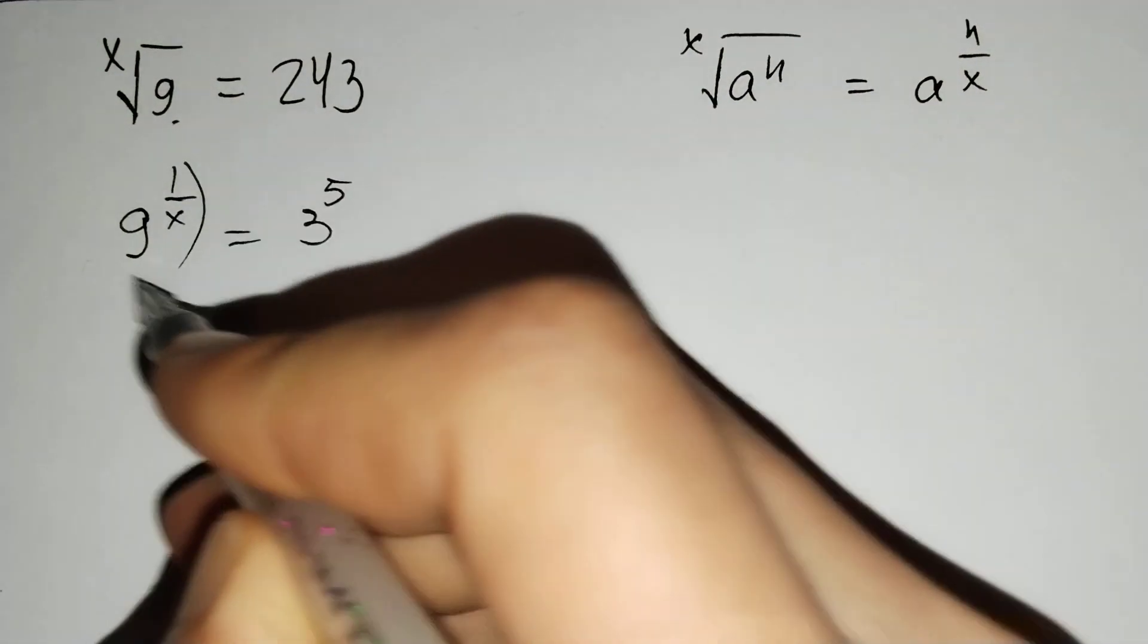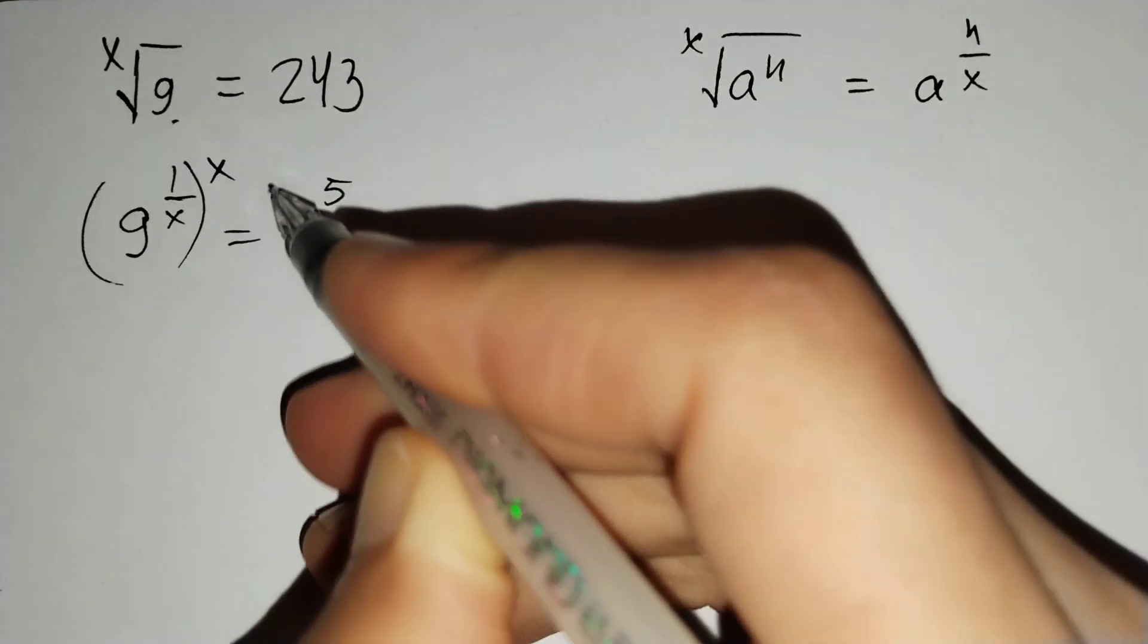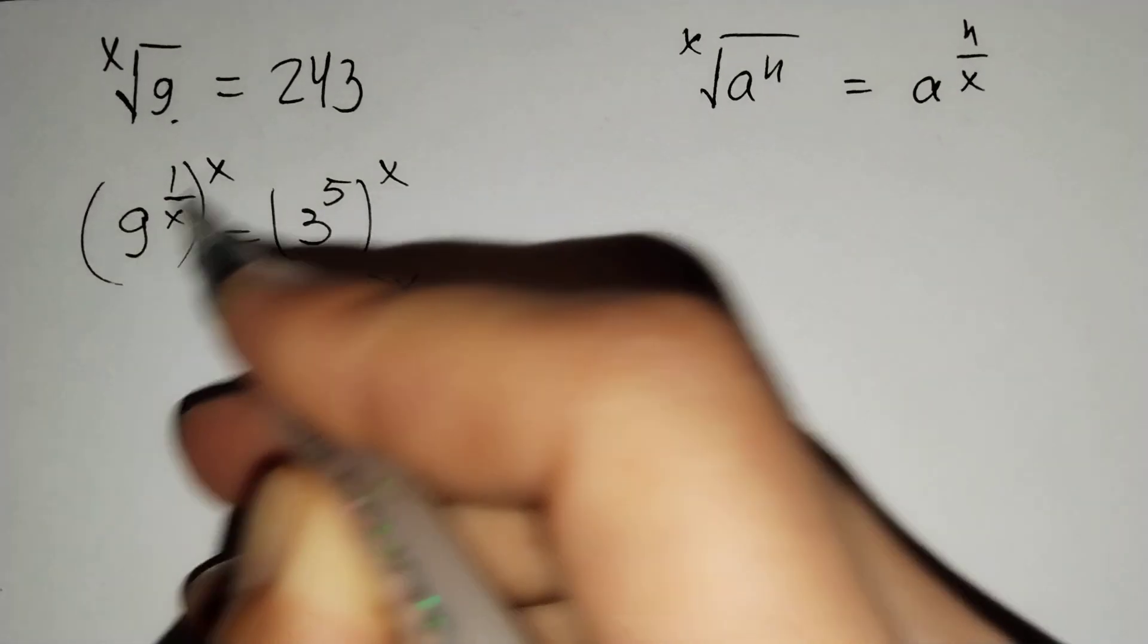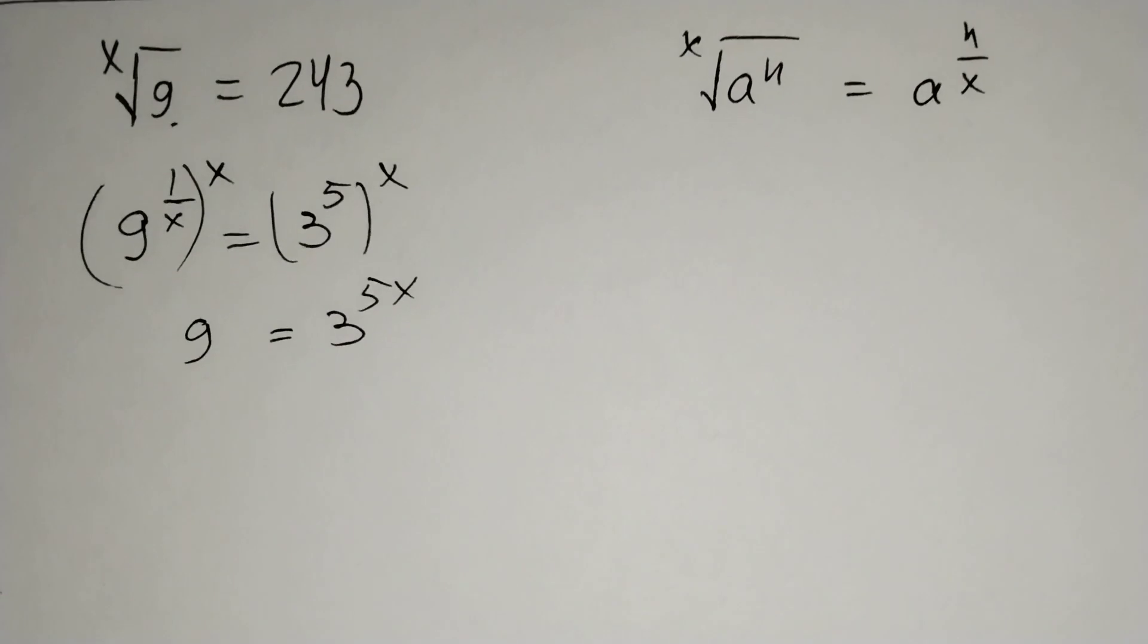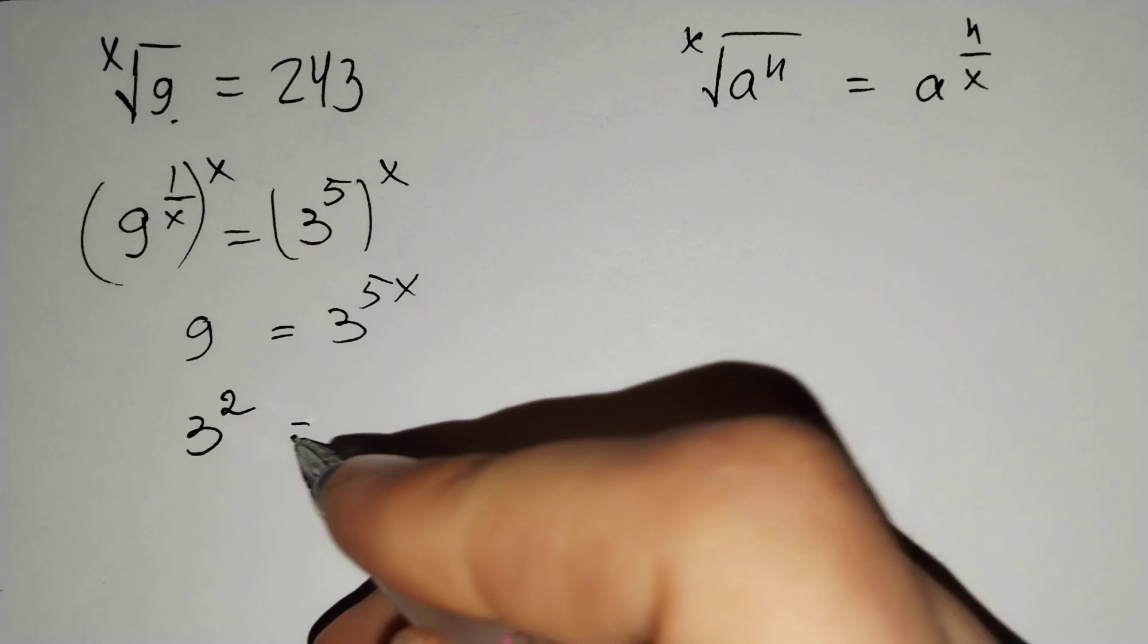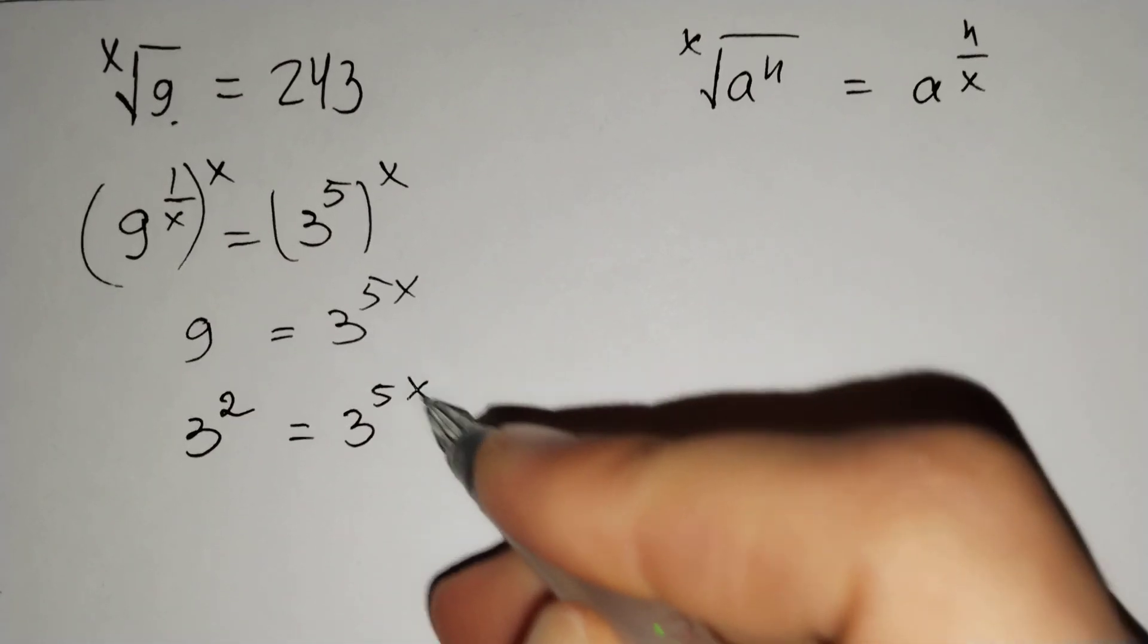If we raise both sides to the x degree, 3 power 5x equals to just 9. And 9 equals to 3 power 2 equals to 3 power 5x.